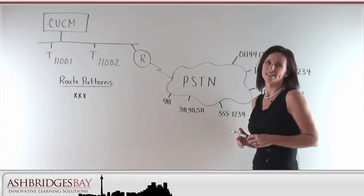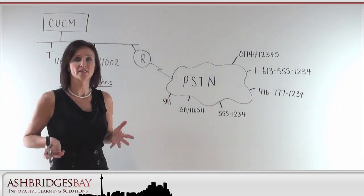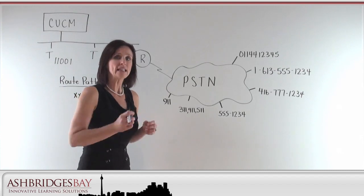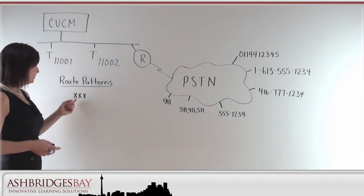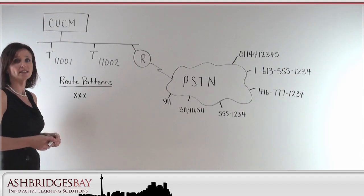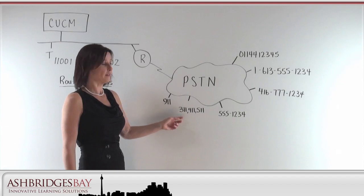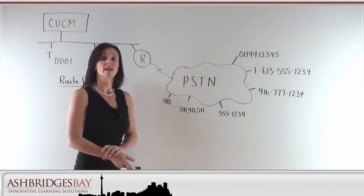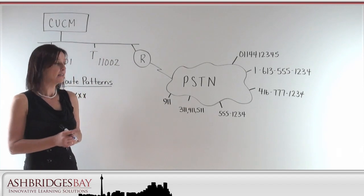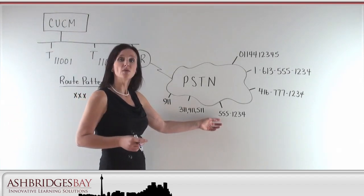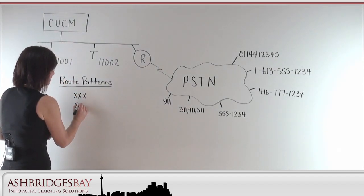For our very first lesson, we're going to focus on route patterns. What do we need to do to develop a set of patterns that will let us call anywhere? Let's make a list of the patterns we're going to deploy on the whiteboard. I've already configured the pattern XXX into the call manager. That's going to let me call 911, 311, 411, and so on. That's just fine if all I'm going to be dialing are three-digit external numbers. But, let's say I want to call a seven-digit local number.